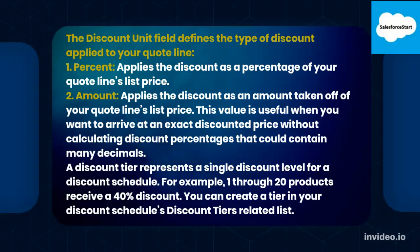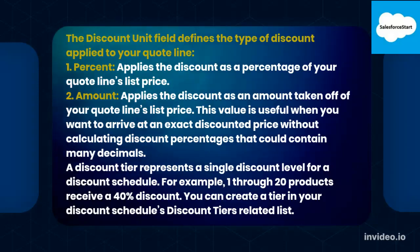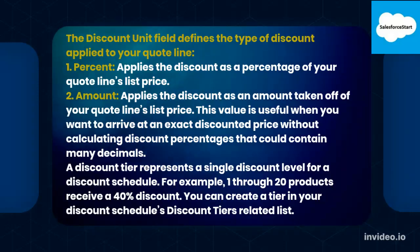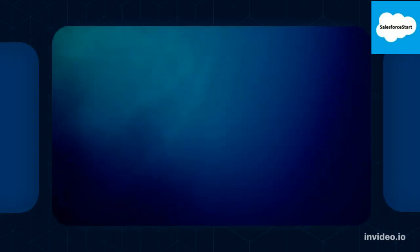The discount unit field defines the type of discount applied to your Quote Lines. 1. Percent: Applies the discount as a percentage of your Quote Lines list price. 2. Amount: Applies the discount as an amount taken off of your Quote Lines list price. This is useful when you want to arrive at an exact discounted price without calculating discount percentages that could contain many decimals. A discount tier represents a single discount level for a discount schedule — for example, 1 through 20 products receive a 40% discount. You can create a tier in your discount schedule's discount tiers related list.